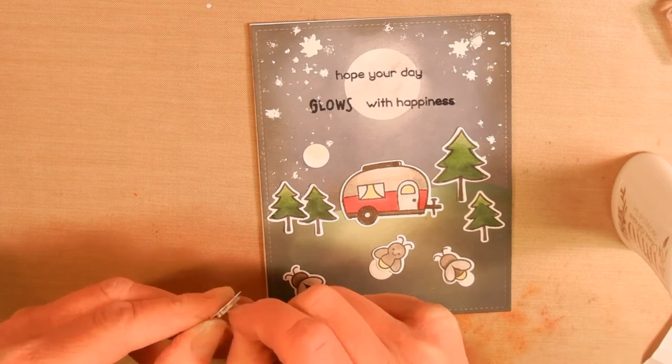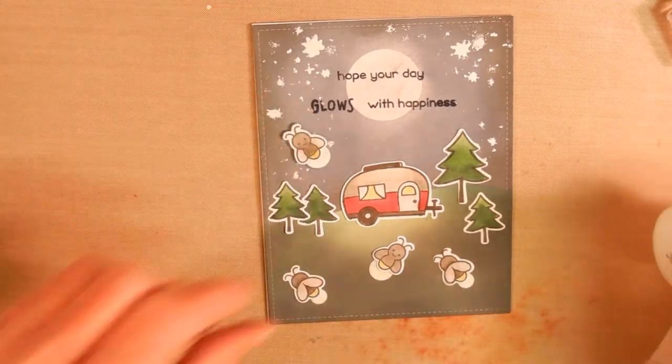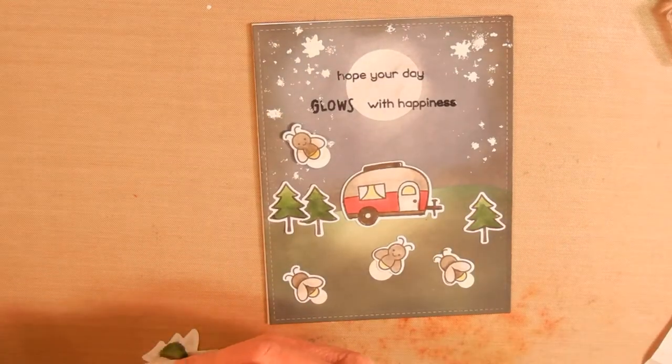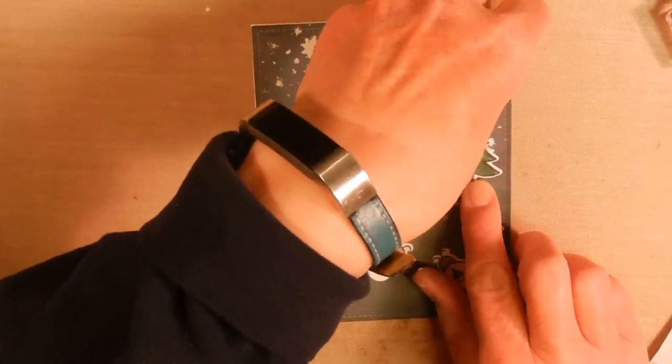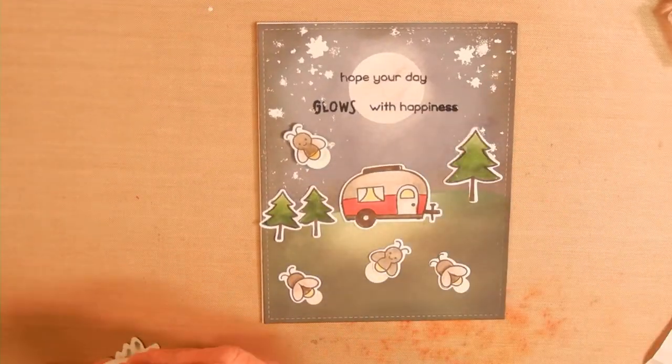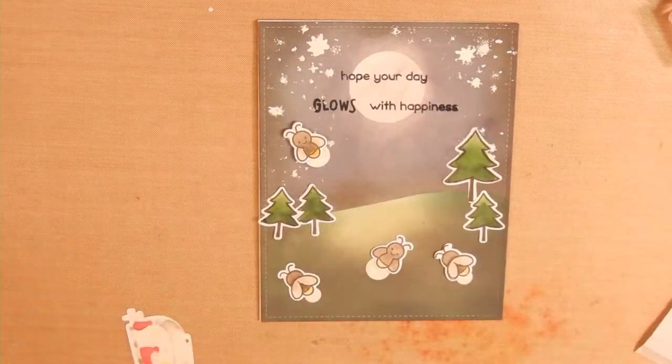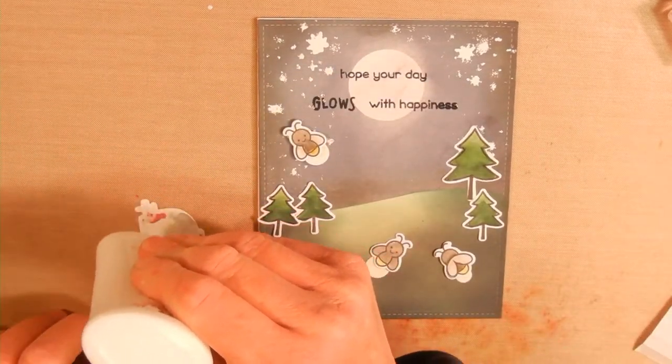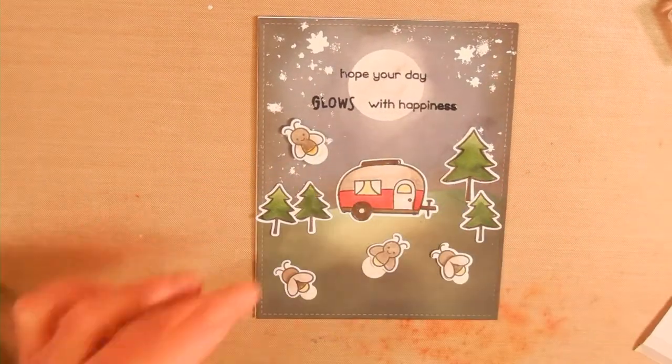I just realized I didn't record one of the steps. I had stamped the circles with VersaMark ink and embossed those with the Lawn Fawn glow in the dark embossing powder. Then cut those out. I'm putting those underneath the fireflies and those will glow in the dark. I'm popping the fireflies up with some foam squares.